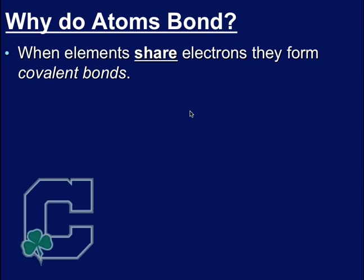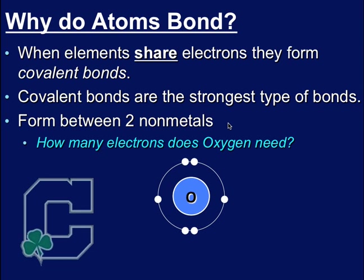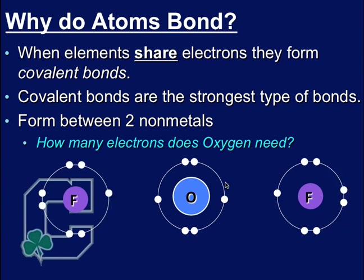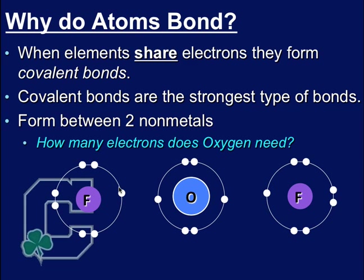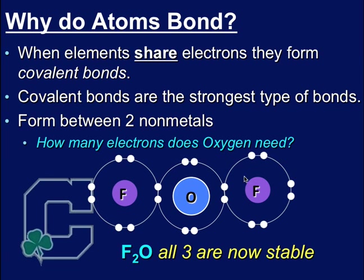Now, what do we call it when elements share electrons? Well, that's known as a covalent bond. Covalent bonds are actually the strongest type of bond and they occur between two nonmetals. So, I've got oxygen here. Oxygen needs two extra electrons to fill his outer shell. Fluorine, on the other hand, only needs one extra electron. Well, if I take two fluorines and bond it with that one oxygen, now you can see all three of them have completely filled up their outer shell. Fluorine has eight, oxygen has eight, and the other fluorine has eight. This is known as F2O, because I have two fluorines and one oxygen, and all three of them are now stable.